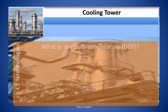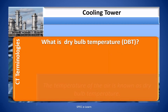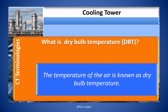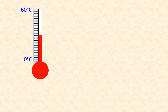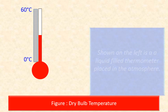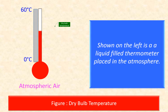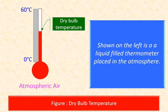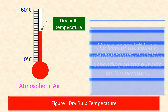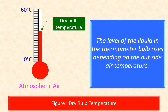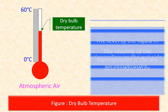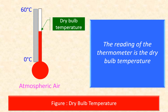What is dry bulb temperature? The temperature of the air is known as dry bulb temperature. Shown in the figure is a liquid-filled thermometer placed in the atmosphere. The level of the liquid rises depending on the outside air temperature, and the reading of the thermometer is the dry bulb temperature.